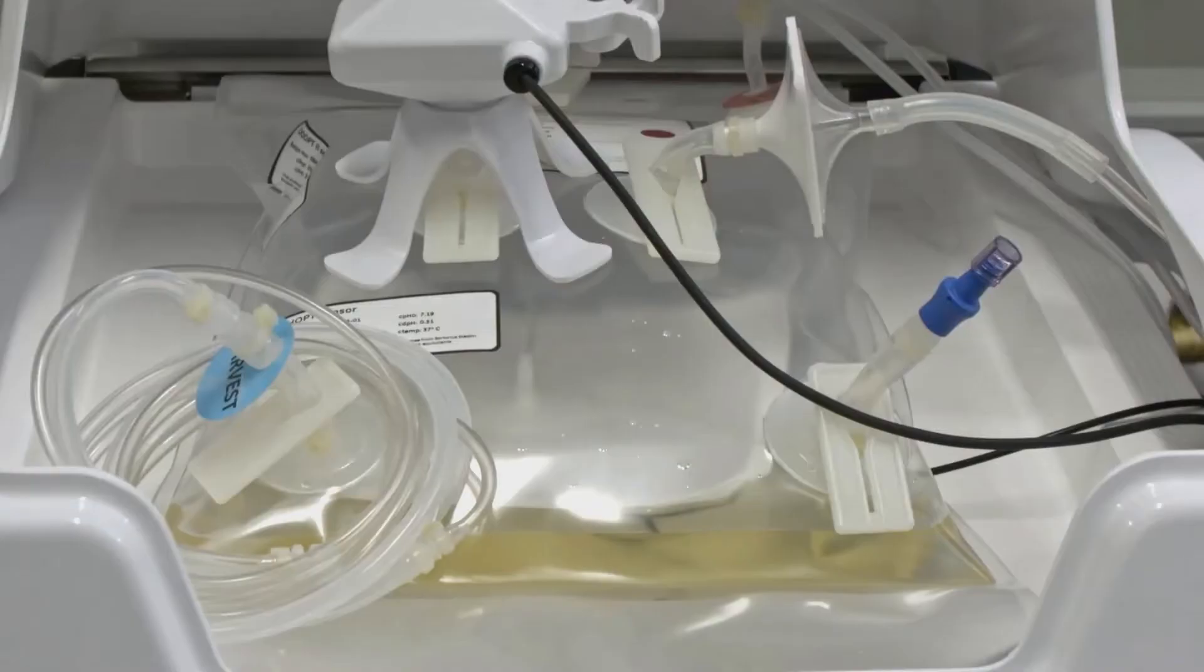Once the cell bag has filled with the set point value of media, you can go back into Unicorn and turn on the rocking and temperature control so that the media will warm up in the cell bag and you will be ready to add your cells into the bag.